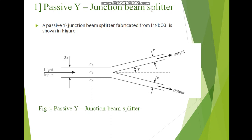The passive Y-junction beam splitter is used where equal power division of the incident beam is required. It has a Y-shaped structure: light enters as input through the fiber core with refractive index N1, and N2 is the cladding refractive index. The light beam is equally divided and we get two outputs. This is the passive Y-junction beam splitter.